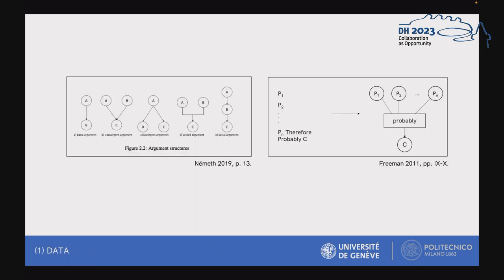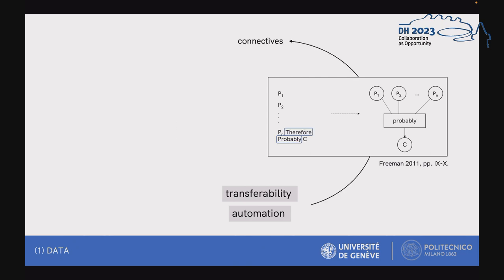Visually transforming the structure of an argument is not an innovative exercise. There is usually a tendency to show the hierarchical relationships between the various parts of the argumentative speech, as it is possible to see in these two examples. We had two conditions in mind to create a visualization: the transferability of the method — it was essential to identify a type of data and a visual approach that could be reproduced with sufficient elasticity on a different corpus — and the automation of the data collection. To ensure transferability, we wanted to work on a type of text element that was automatically traceable, whose category was present in any essay. In line with both conditions, we decided to work on the presence of argumentative connectives.